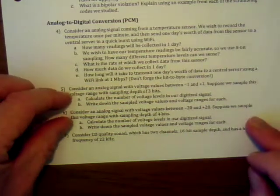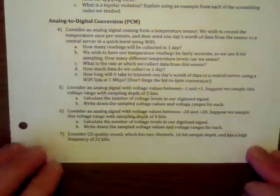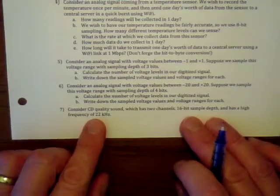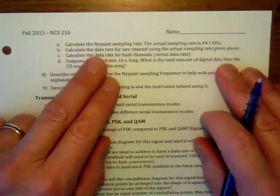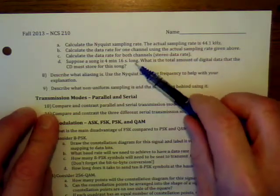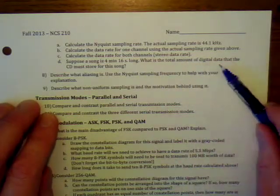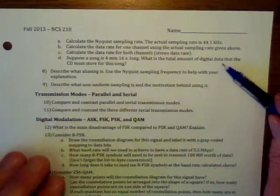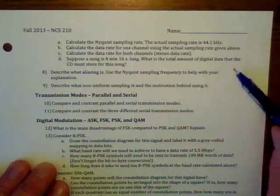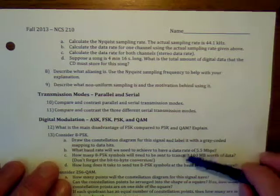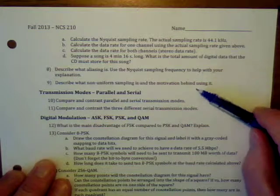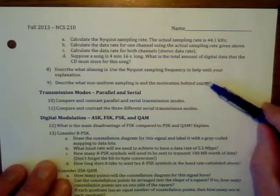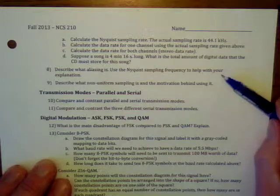For CD quality sound — problem seven — this is an example I did on the board. Make sure you know sampling rate, data rate, data rate for stereo, and then multiply by the length of a song to get total data. This is uncompressed, so it's a WAV file, not MP3. For problems eight and nine, make sure you understand aliasing, Nyquist sampling, and non-uniform sampling — read the book or watch the videos and be able to explain them in your own words.